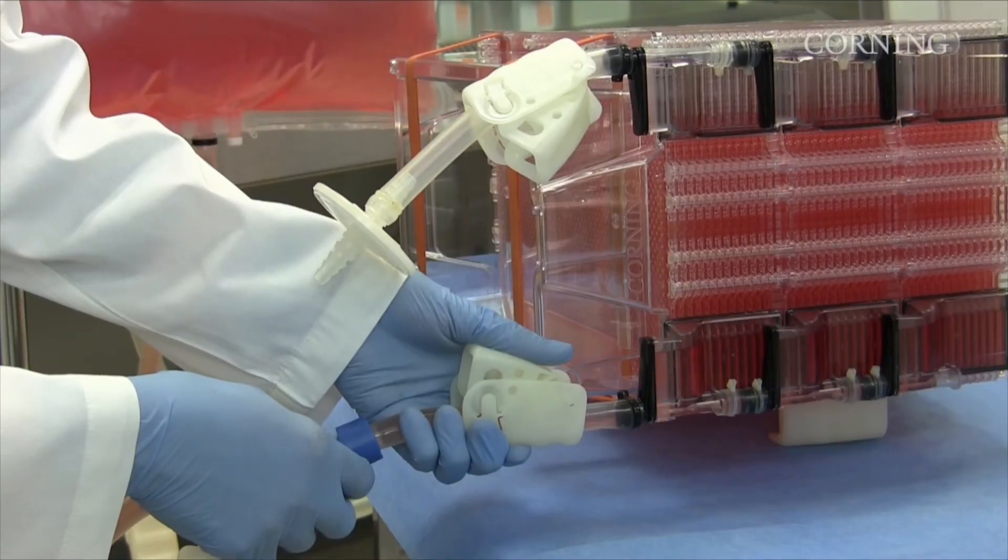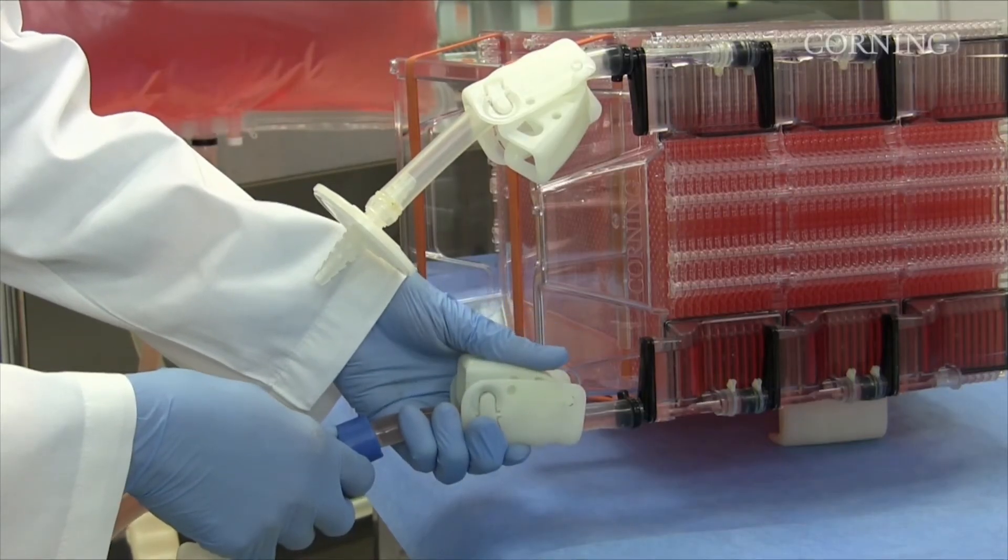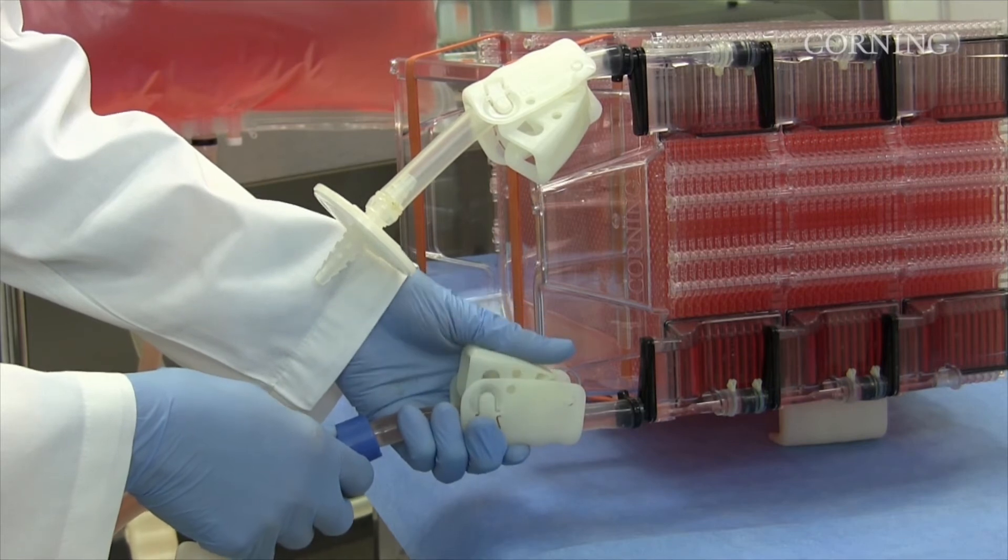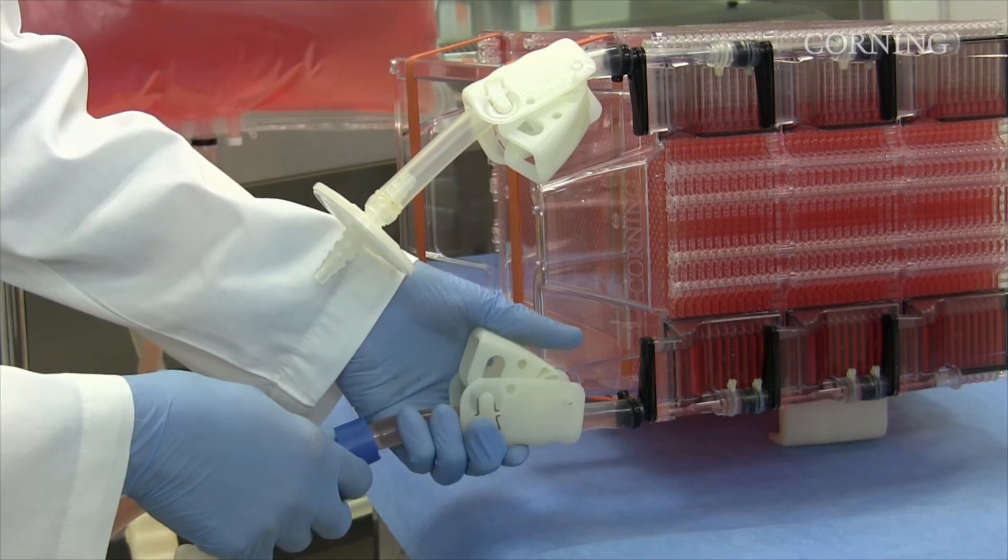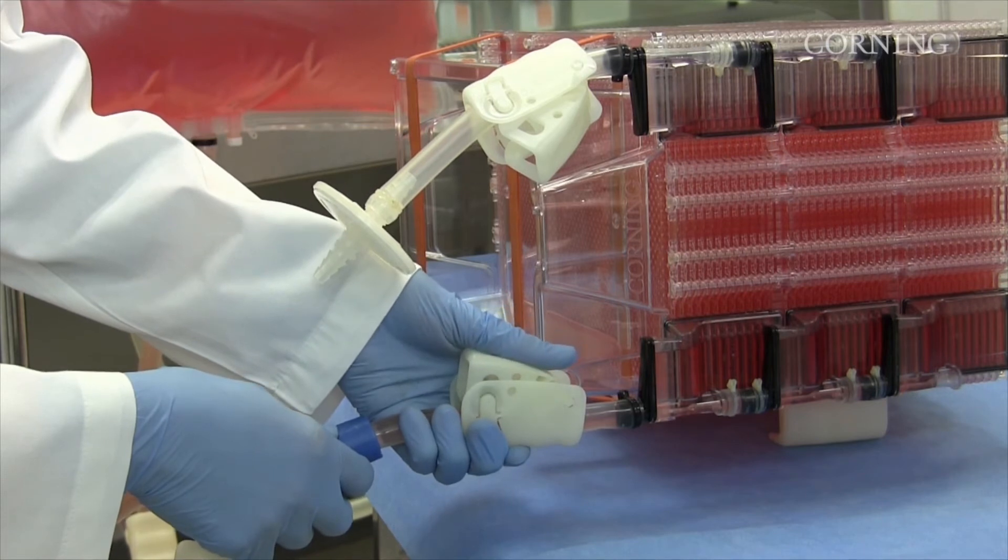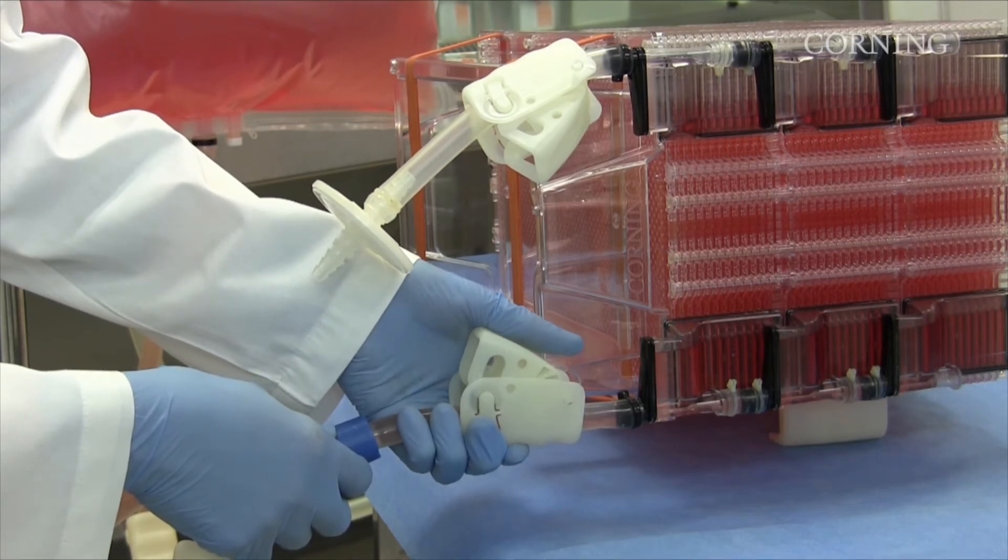When the vessel is three-quarters full, you can use the liquid handling tubing clamp as a handbrake to slow the flow of liquid into the HyperStack vessel and prevent overfilling. Never close the vent filter tubing clamp to control the flow rate.